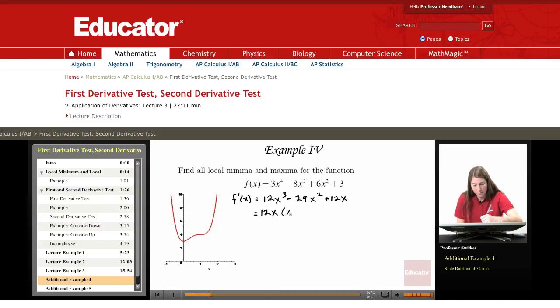So I'm first going to do a bit of factoring here. So I have 12x times x squared minus 2x plus 1. So I have 12x times x minus 1 quantity squared. I'm going to set that to zero and I'll get x equals zero and I'll get x equals 1. This function's derivative is defined everywhere, so no weird stuff happening with vertical asymptotes.